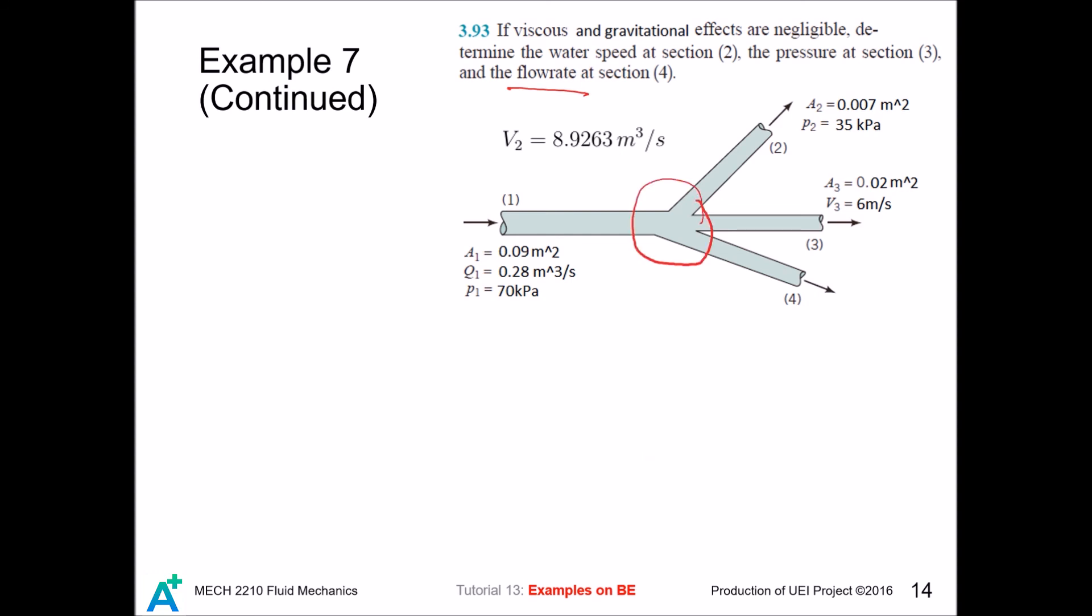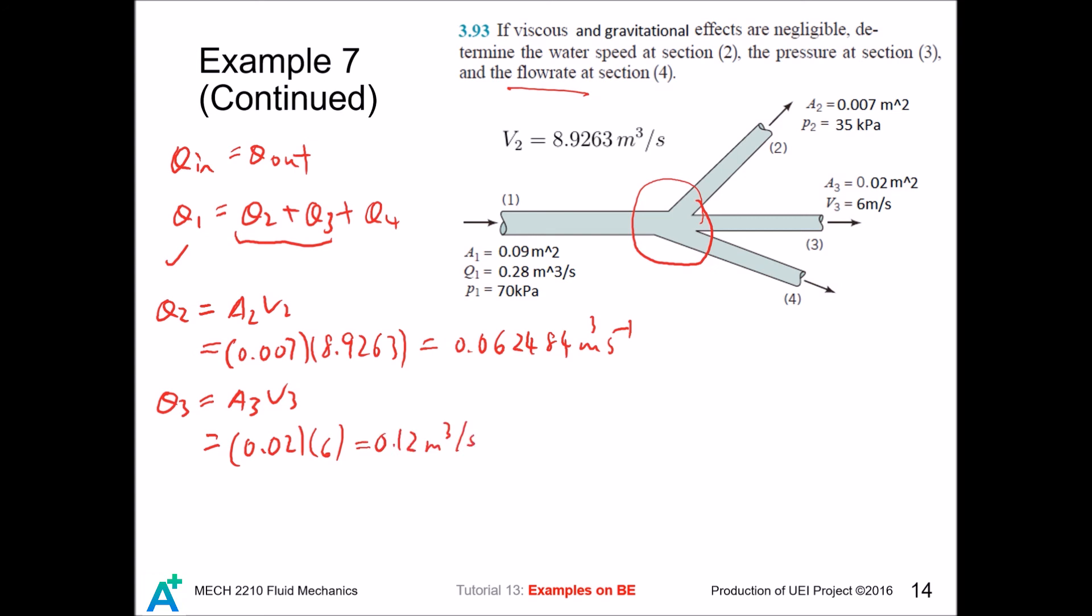Only one is going in, all the other three are going out. This guy is already given but we haven't found these two guys, so we go on and calculate. And for Q3, so that we can solve for Q4.